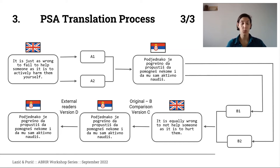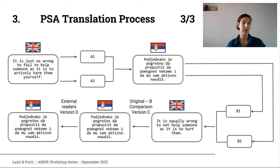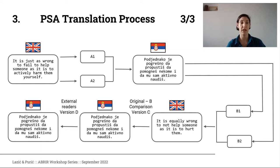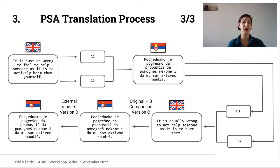After that, there is another stage where the translation is sent to external readers — non-academics who are fluent in the target language, in this case Serbian native speakers. We recruited even more than the minimum of two. They go through the items and note any comments and questions they have, which is very useful. After revising their comments, you create the final version of the translation, which is called version D.